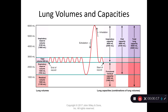Let's begin discussing something called the total lung capacity. Your lungs can hold only so much air. For males, you have an average of 6,000 milliliters. For females, you have an average of 4,200 milliliters. All of this air can be retained within your lungs.